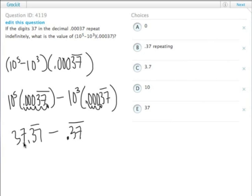So if we have 37.37 repeating minus that 0.37 repeating, all we are left with is a straight-up 37, which is answer choice E.